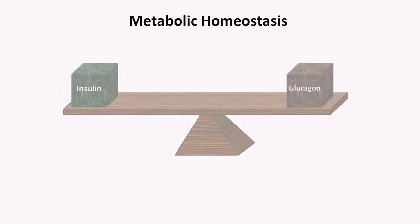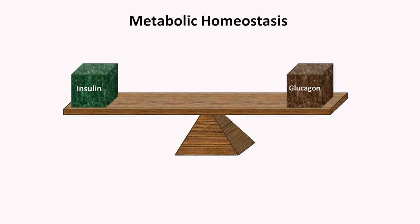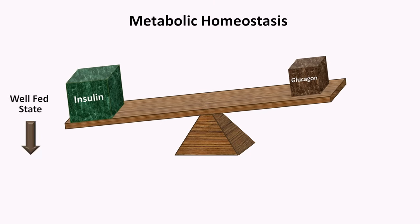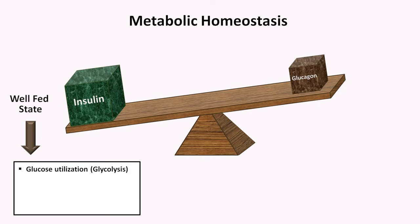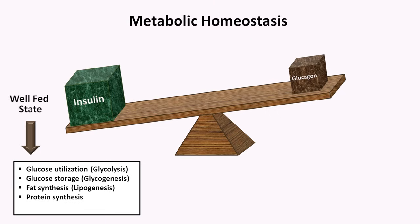Insulin and glucagon play a critical role in maintaining metabolic homeostasis, and they act largely in an antagonistic way such that the primary actions of one hormone are the complete opposite of the other. When the body is in a well-fed state, insulin predominates. The primary actions of insulin are glucose utilization (glycolysis), glucose storage as glycogen (glycogenesis), fat synthesis (lipogenesis), protein synthesis, and general promotion of glucose uptake in tissues, which also helps to promote the previous four actions.